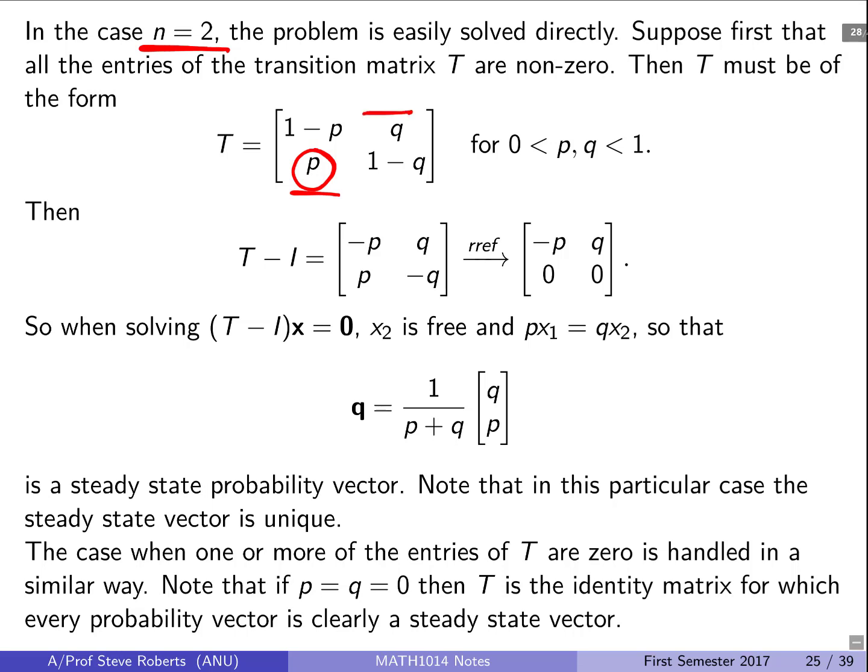And on the second column, if we make this entry up here Q, then the other entry has to be one minus Q. Now given that we're interested in T minus identity, we've set this up in such a nice way that the ones drop out. And so we're left with a matrix of this form, which reduces to this form. Now we observe that the X2 entry has to be free and that the relationship between X1 and X2 is given by PX1 is equal to QX2. So we can write down what X1 and X2 is.